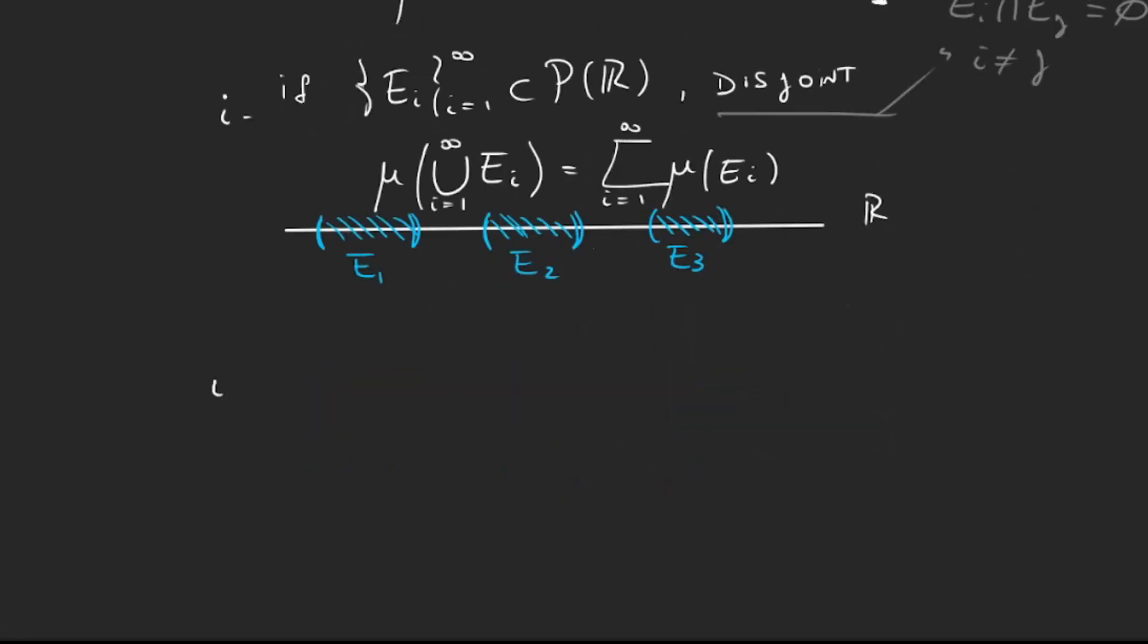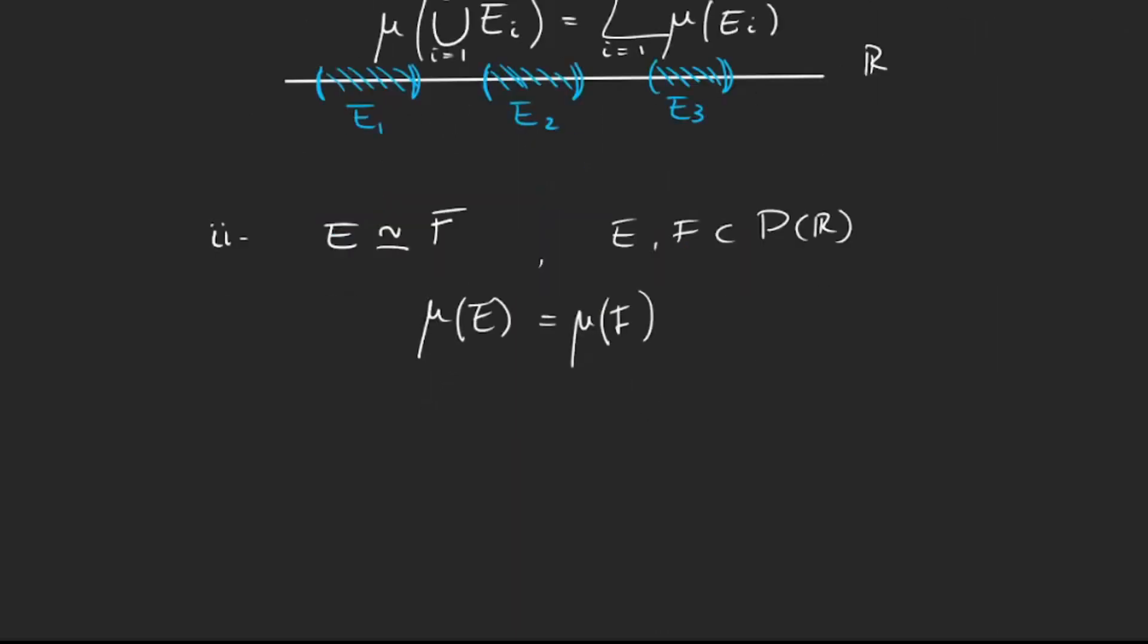The second property we're going to ask is that if we have a set E that is congruent—I'll explain this in a minute—congruent to another set F, E and F, both sets in parts of R, so subsets of R, then we obviously want the measure of E to be equal to the measure of F. What this is—